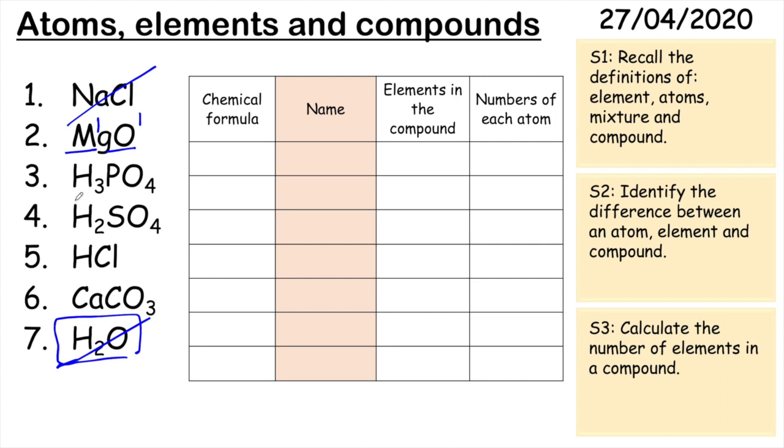So this one here, you've got three elements. You've got hydrogen, phosphorus and oxygen. And you've got three hydrogens, one phosphorus and four oxygens.